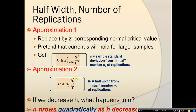In both formulas, notice that we have h squared — our desired precision — at the bottom of the expression. So if we decrease h, what happens to n? If we do that, n grows quadratically as h decreases, and you can see that's true for both approximations.